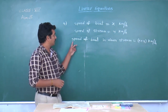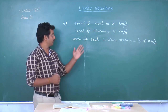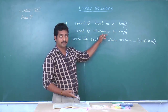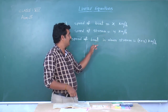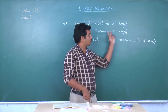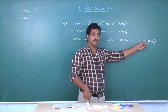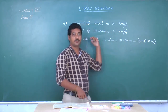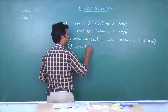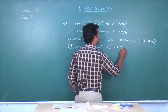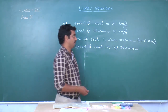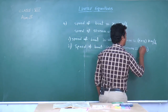Once again, the speed of the boat in downstream: whenever the boat is in downstream, the speed of the stream is added to it. So the speed of the boat in downstream is x plus y kilometers per hour. Coming to the second case, speed of the boat in upstream is equal to x minus y kilometers per hour.